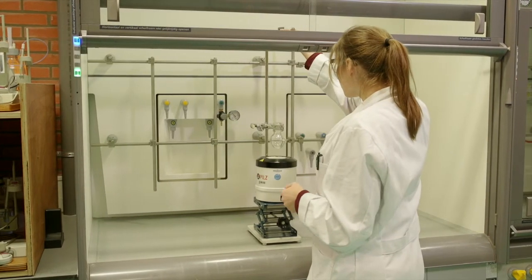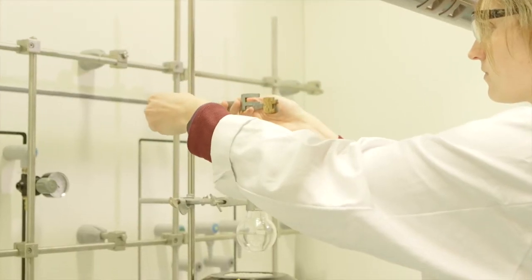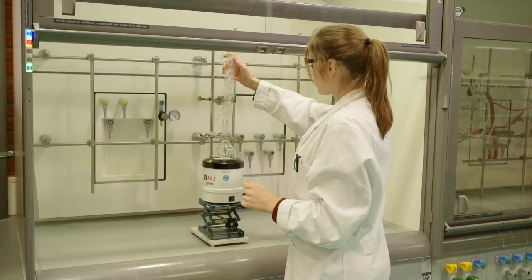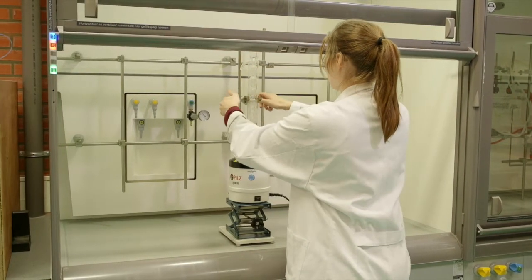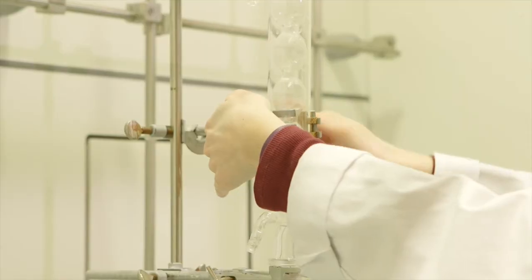Attach a second clamp to the stand. Place the condenser on the flask and attach the clamp to the condenser. The clamp should be attached to the middle of the condenser, not at the top. The setup is now almost complete.